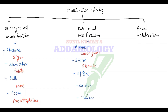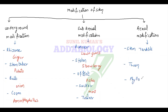Sub-aerial modification means the stem comes above the soil surface. We have runners, stolon, offset, suckers, and even trailers. Aerial modification — the stem is above the soil surface. In this we have stem tendrils, thorn, phylloclad, cladode, and bulbil.